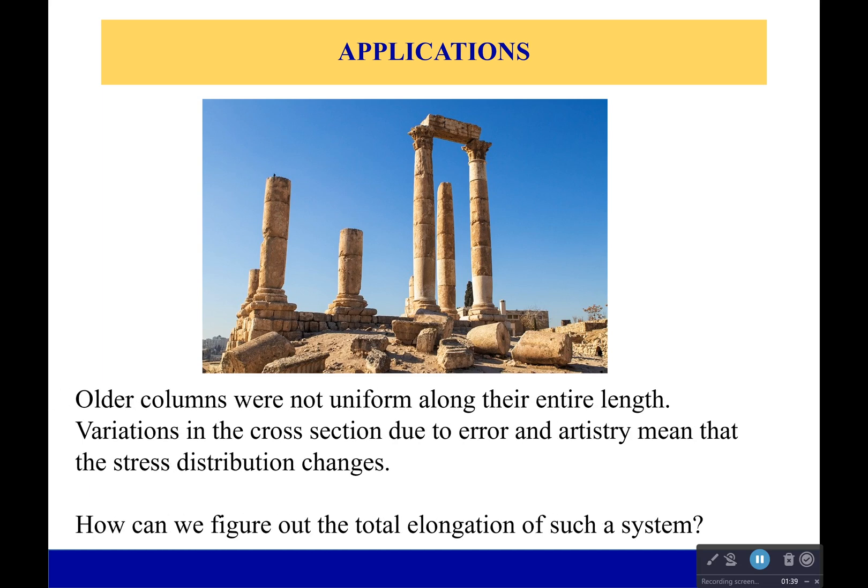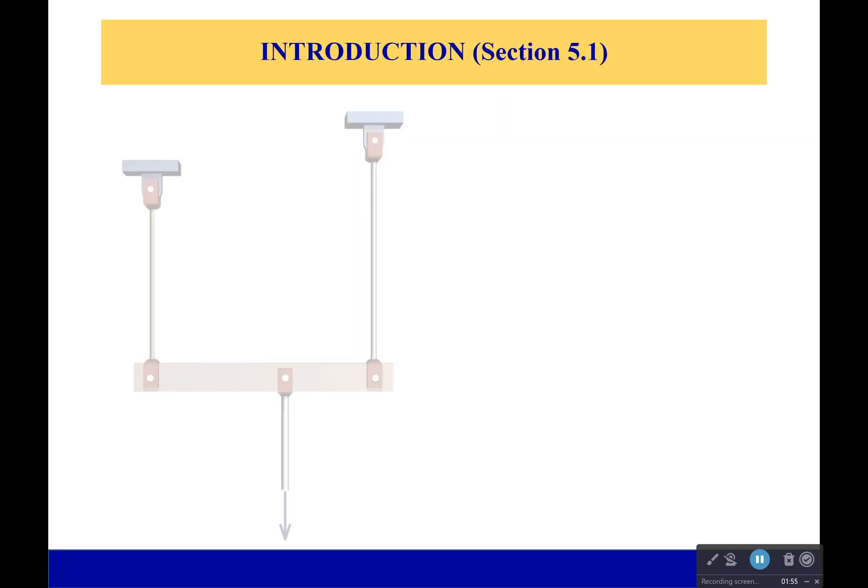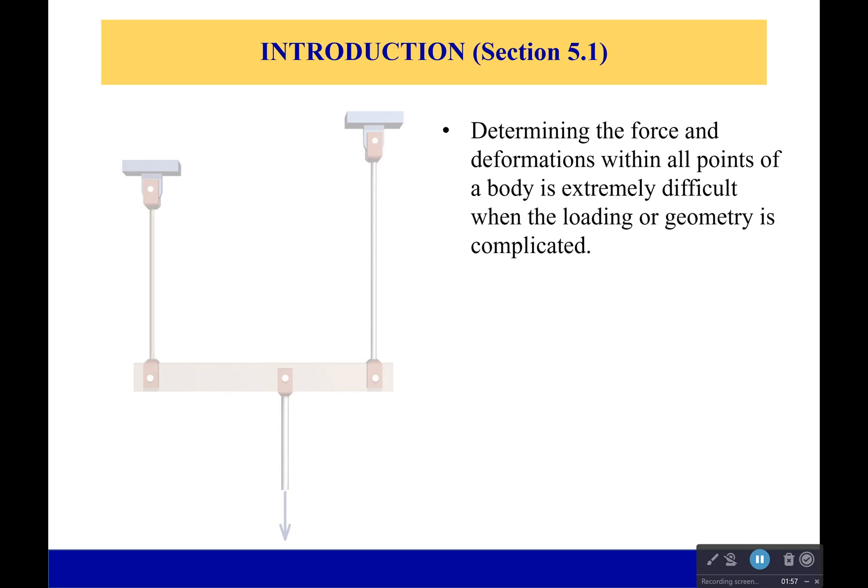So first off, older columns, they're not uniform along their entire length, which means that all of our equations don't work. Now stress is equal to force over area. Area is changing. So how can we figure out the total elongation of a system if the cross-sectional area is constantly changing? Well, we're going to get to that, but we won't get to that today.